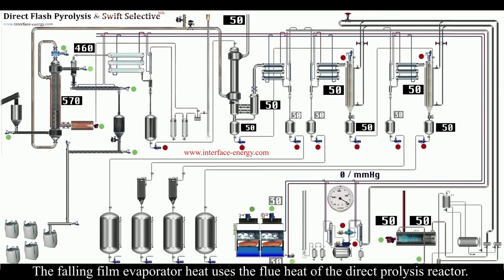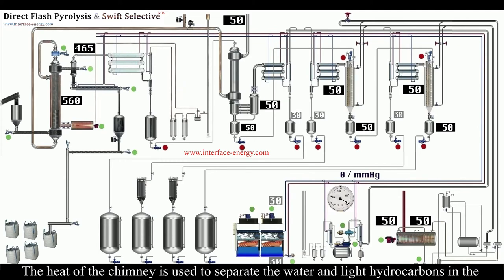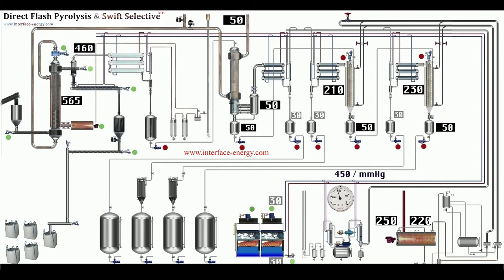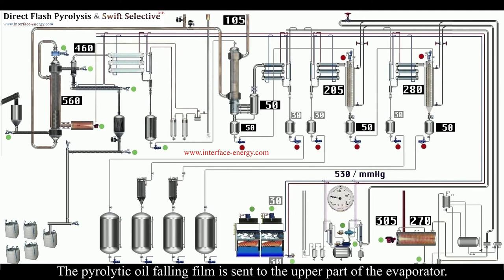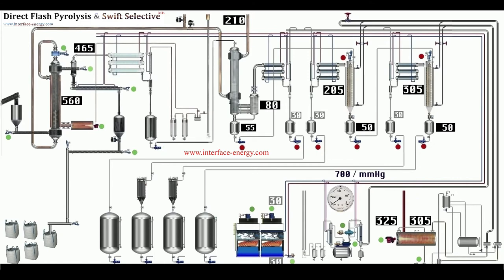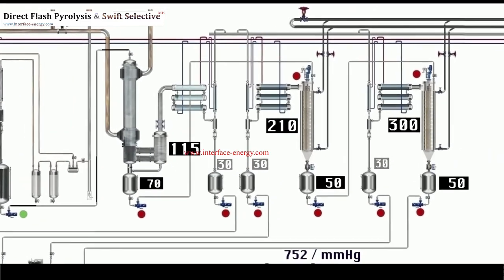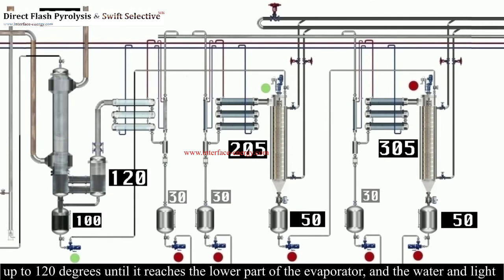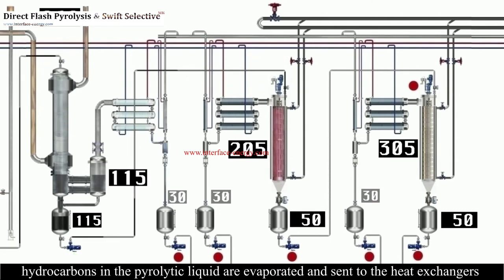The falling film evaporator uses the flue heat of the direct pyrolysis reactor. The heat of the chimney is used to separate the water and light hydrocarbons in the pyrolytic liquid and also provides energy efficiency. The pyrolytic oil is sent to the upper part of the falling film evaporator. The pyrolytic liquid supplied from the upper part heats up to 120 degrees until it reaches the lower part of the evaporator, and the water and light hydrocarbons in the pyrolytic liquid are evaporated and sent to the heat exchangers from the separator upper.